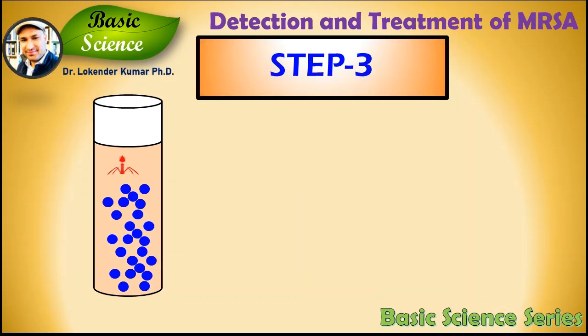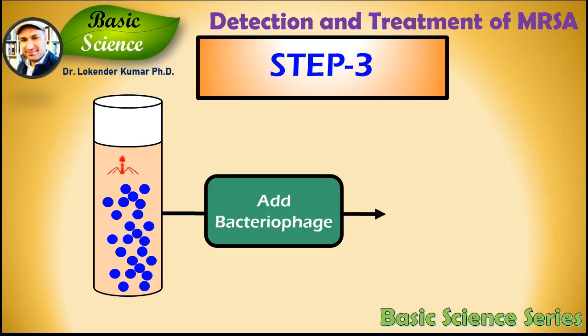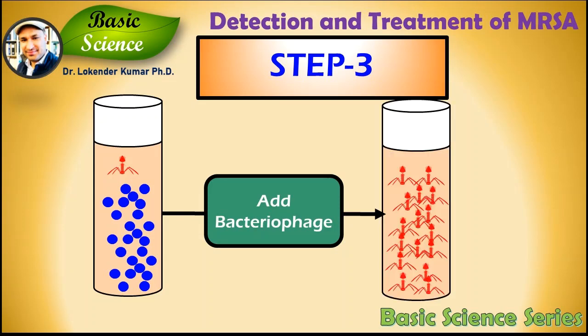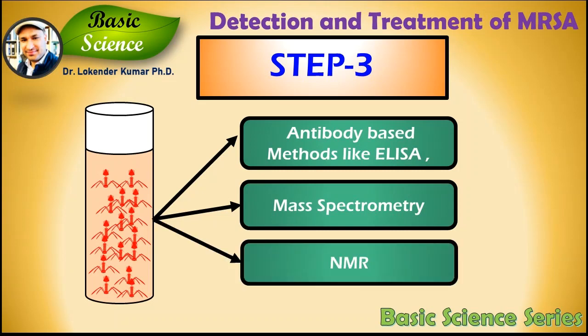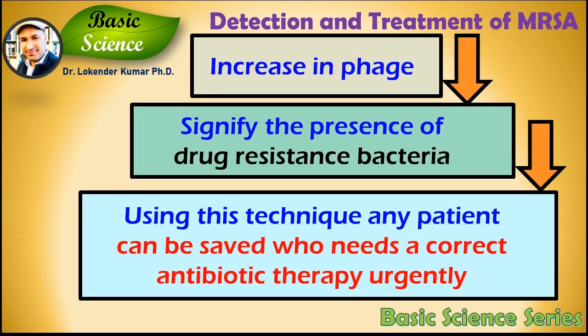Step 3 is bacteriophage incubation. You add a Staphylococcus phage to the bacterial sample that was incubated with methicillin. If bacteria have survived, the bacteriophage population will infect the bacteria and the bacteriophage population will increase. Since bacteriophages are proteins, you can use any method of protein detection to find out whether there is a significant increase in protein content. Other methods of phage detection include antibody-based methods like ELISA, and other analytic tools like mass spectrometry and nuclear magnetic resonance. An increase in protein content will signify the presence of drug-resistant bacteria in your sample.